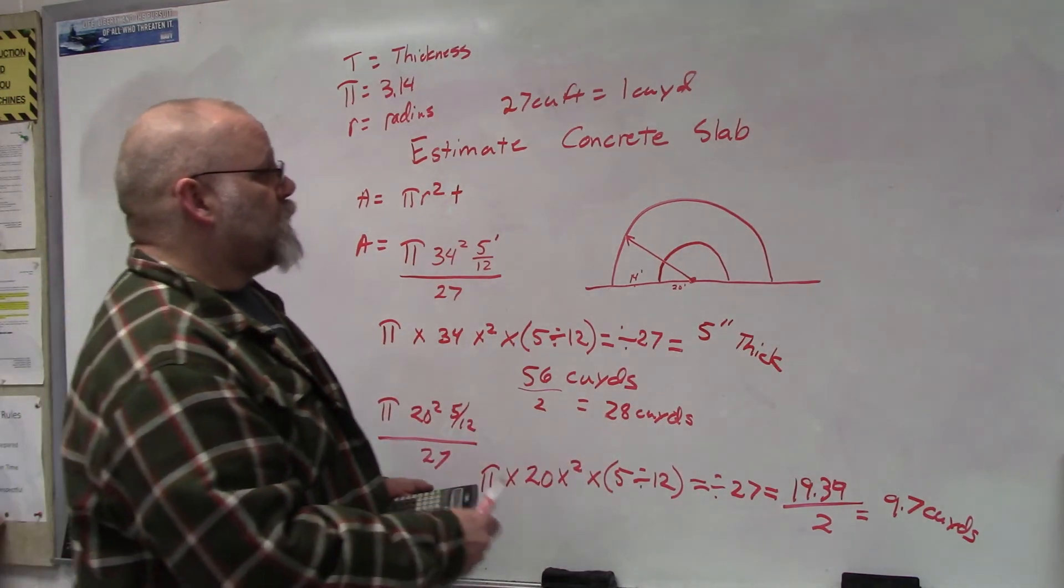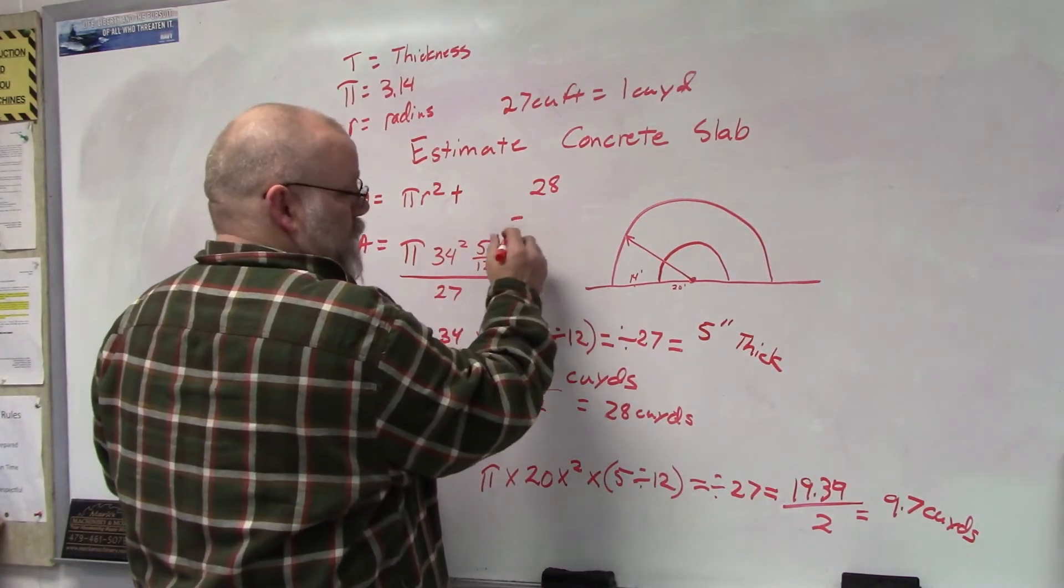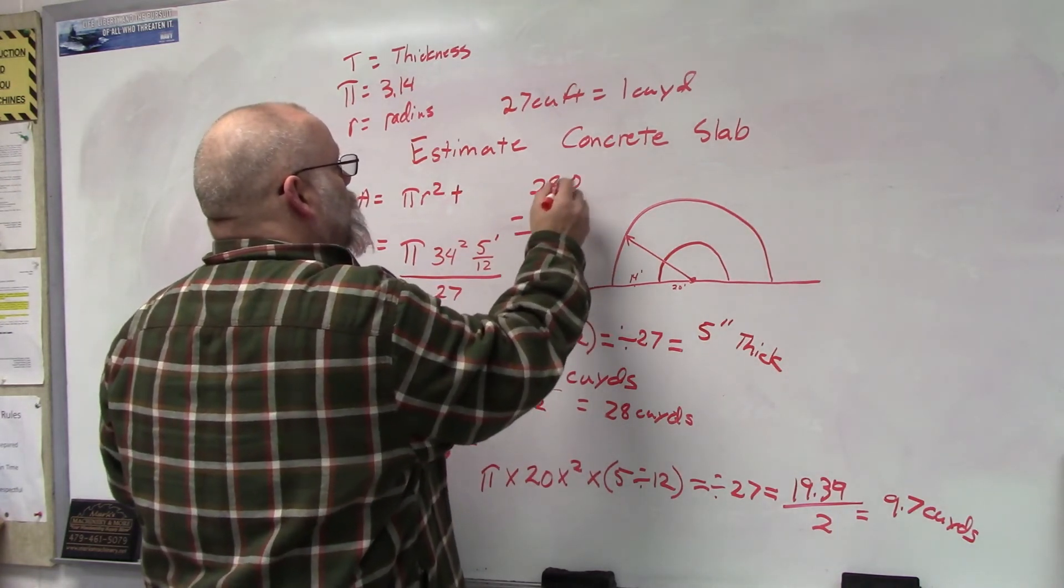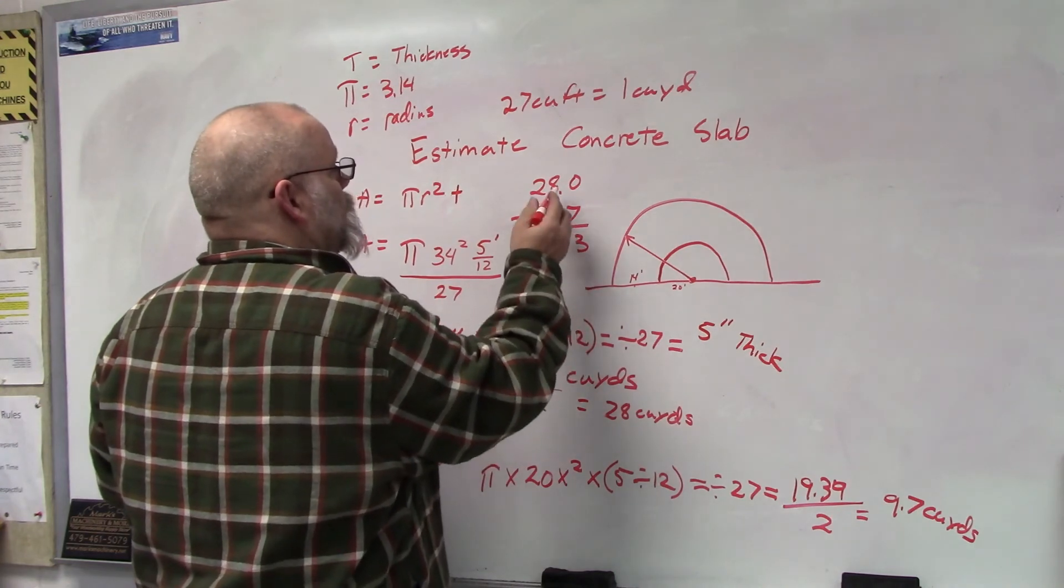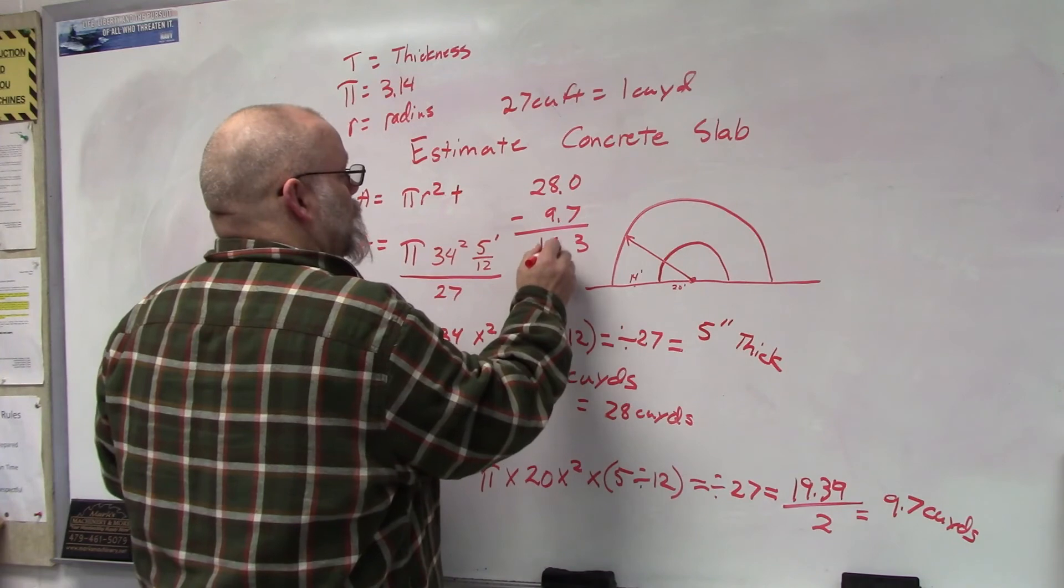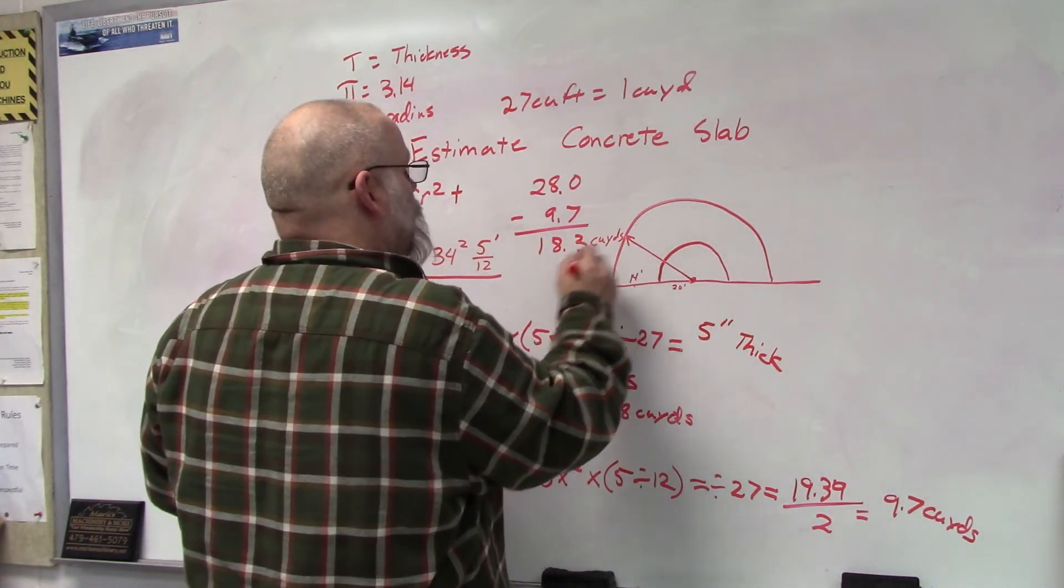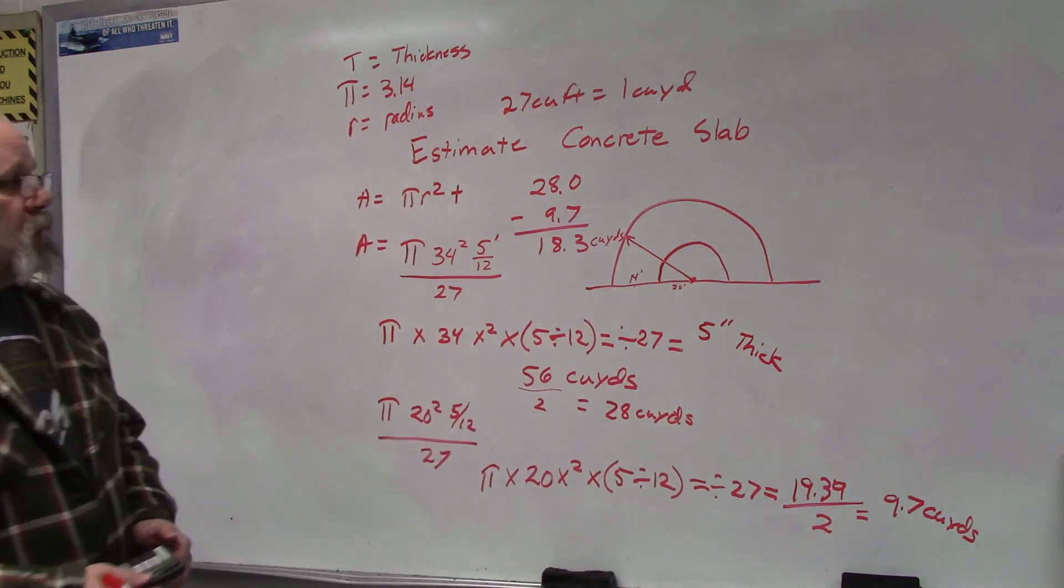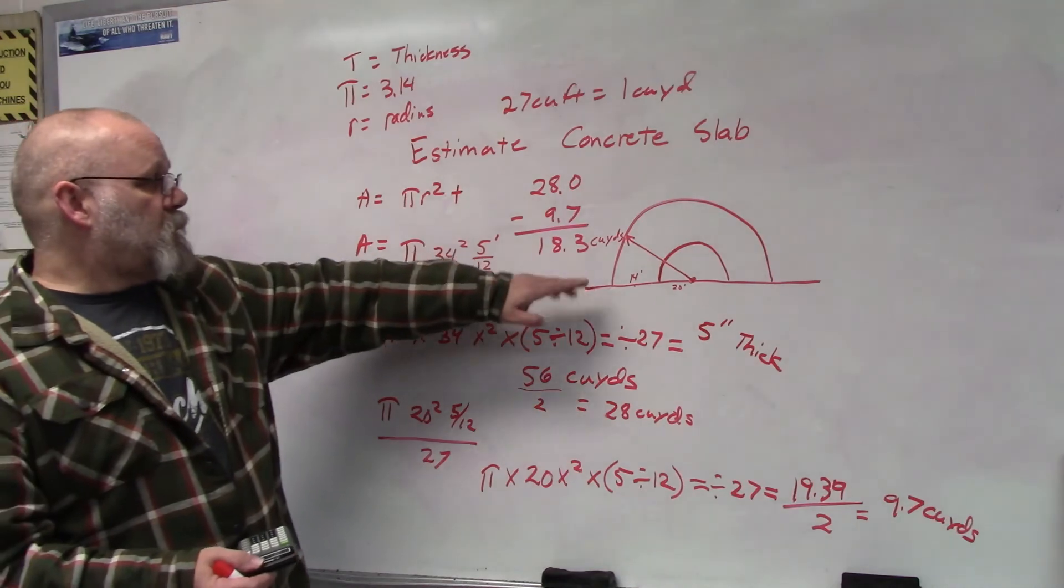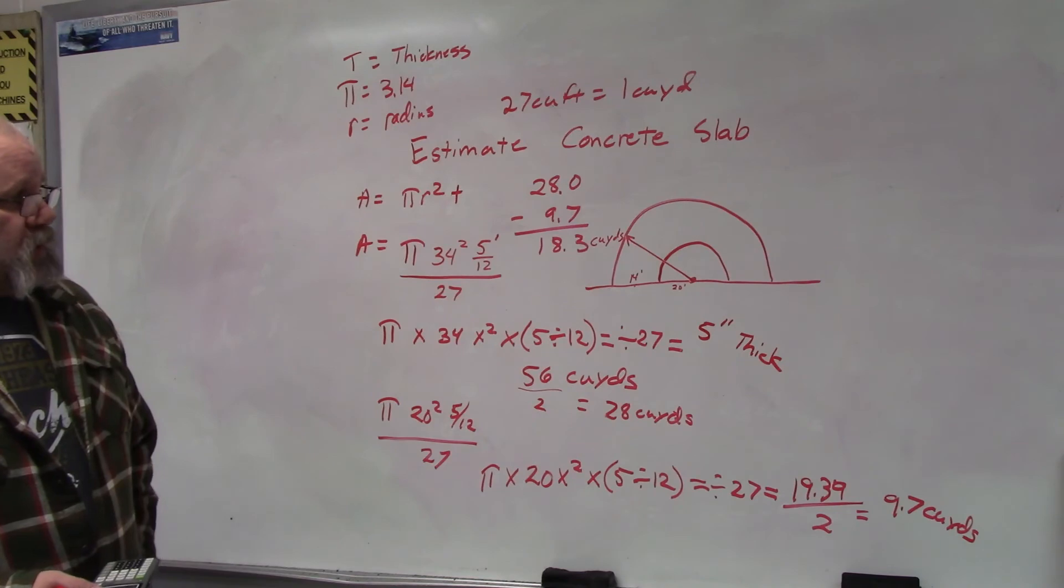So then all I have to do is take 28 minus 9.7, and that's 18.3. So it would take 18.3 cubic yards to pour this driveway 5 inches thick.